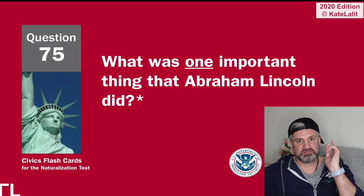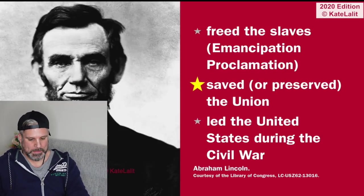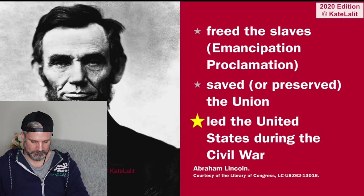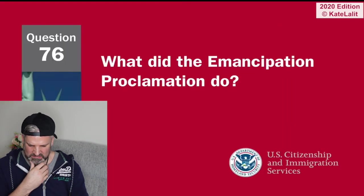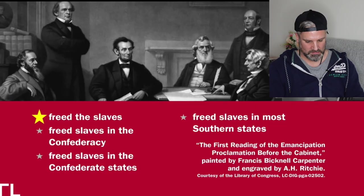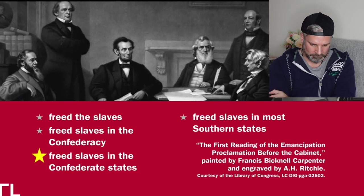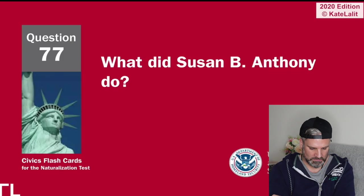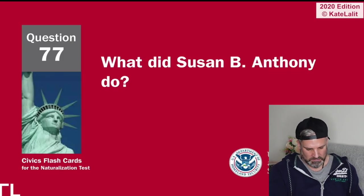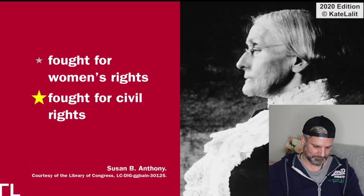What was one important thing that Abraham Lincoln did? Freed the slaves — Emancipation Proclamation, saved the Union, led the United States during the Civil War. What did the Emancipation Proclamation do? Freed the slaves, freed slaves in the Confederacy, freed slaves in most southern states. What did Susan B. Anthony do? I've never read of her — fought for women's rights, fought for civil rights.